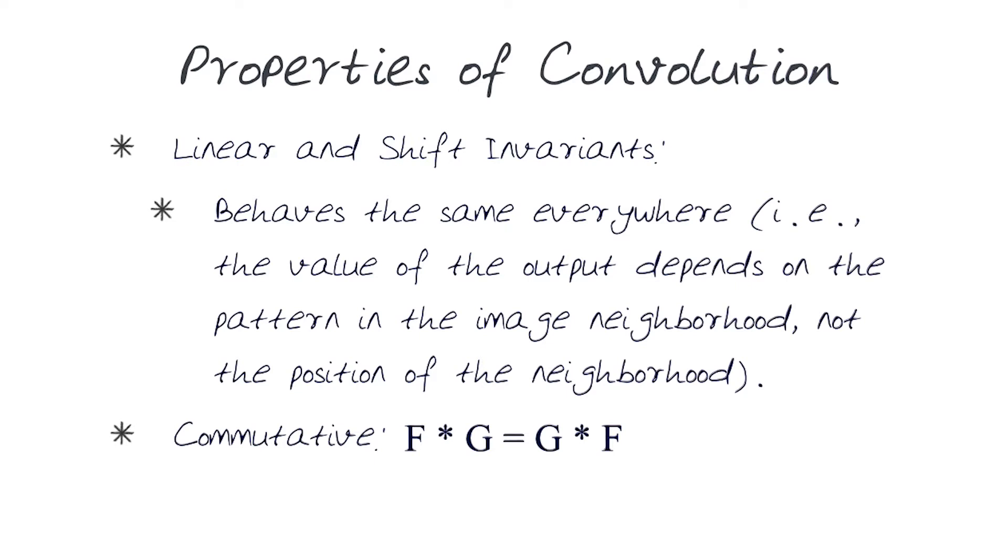Another property that's extremely valuable is the commutative nature of convolution. That means that I can apply F * G in this order, or I can flip it and apply G * F in this order.